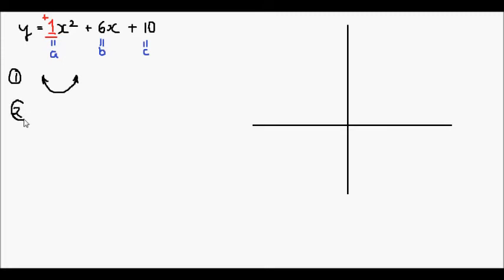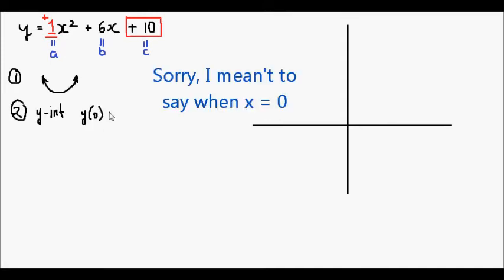The second bit of information we're looking for is the y-intercept. And that's just going to be the c value. Or more formally, when x is equal to zero. That's positive 10.